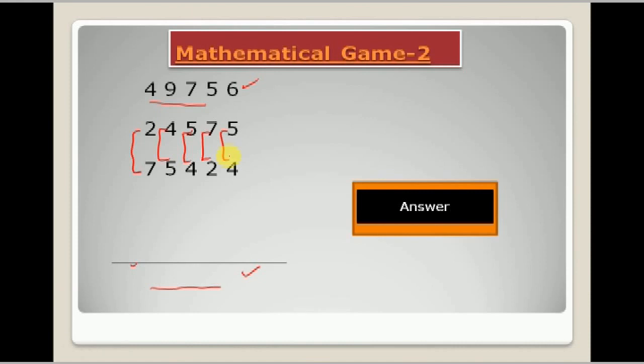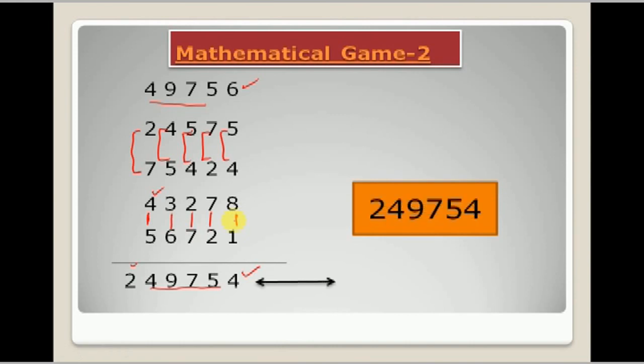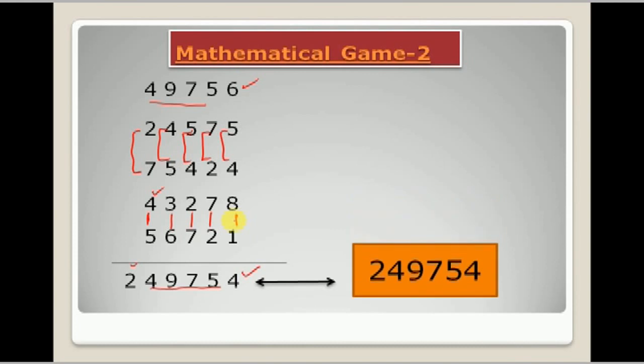Now again you will write a number. Now I will make it 9. I will make this 4 nine, so I will write 5 to make it 9. Then 3 plus 6 equals 9, 2 plus 7 equals 9, 7 plus 2 equals 9, 8 plus 1 equals 9. So when you will add, the answer will be exactly same which I have written already.